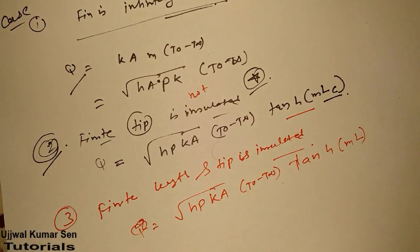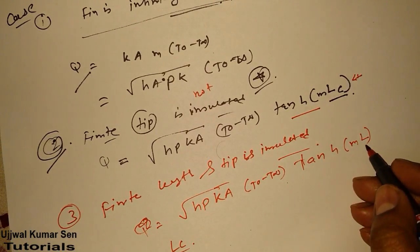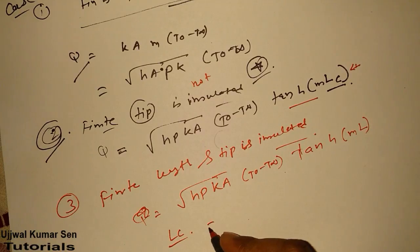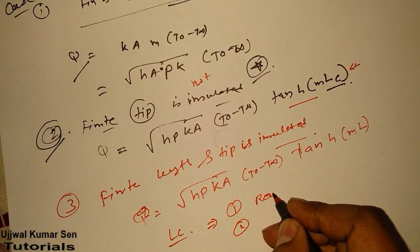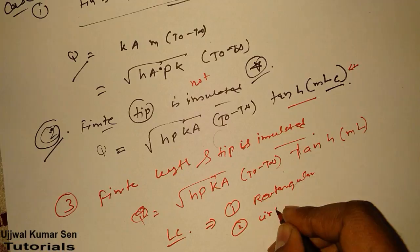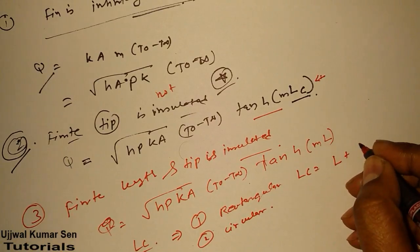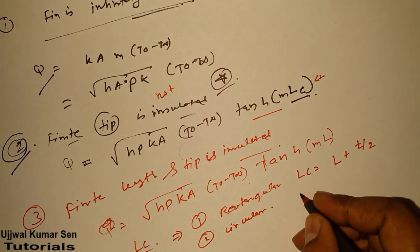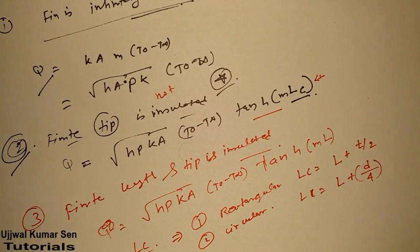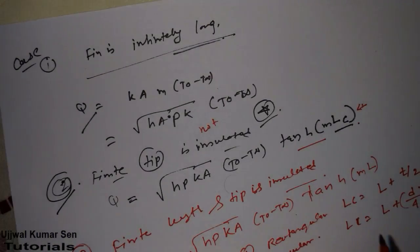What is Lc? L is the length of the fin and Lc is the characteristic length. There are two types of fins: rectangular type and pin fin (circular type). For a rectangular fin: Lc = L + t/2, where t is thickness. For a circular (pin) fin: Lc = L + D/4, where D is the diameter.